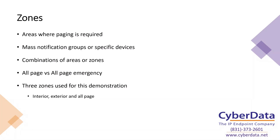You can utilize the other priorities to still have volume control. For today's demonstration, we're just going to have three zones — a pretty simple setup with an interior, an exterior, and an all page, which would be both the interior and the exterior together.